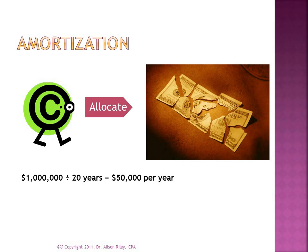We perform a similar procedure to recognise the expense of some intangible assets such as copyrights and customer lists. A portion of the cost is allocated into expense over the useful life of the intangible asset. This process is called amortisation only because it involves intangible assets. We reserve the term depreciation for the process of expensing capital assets.